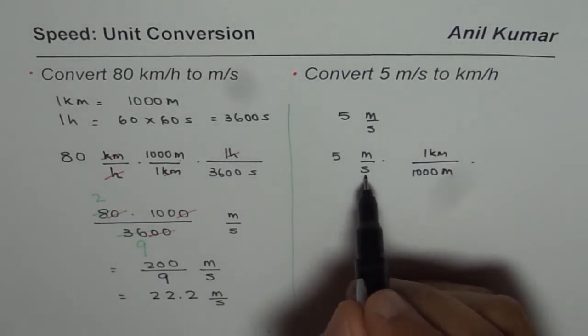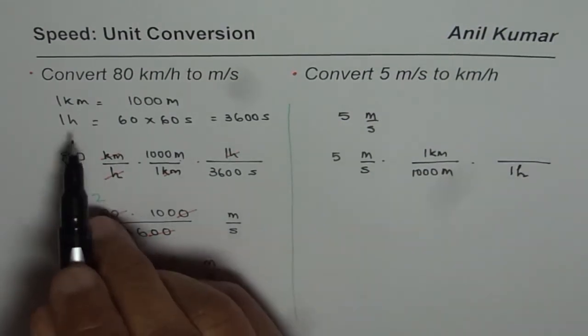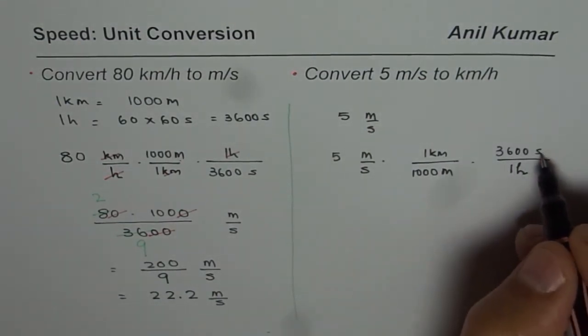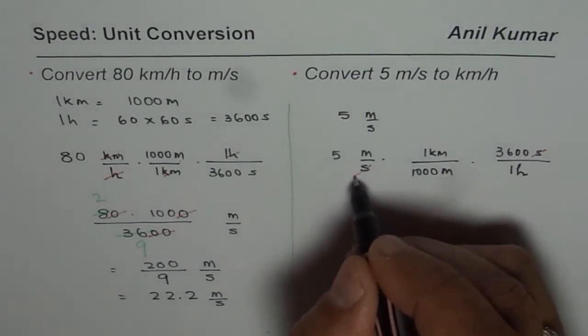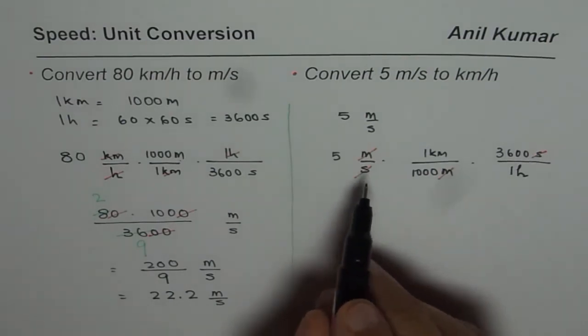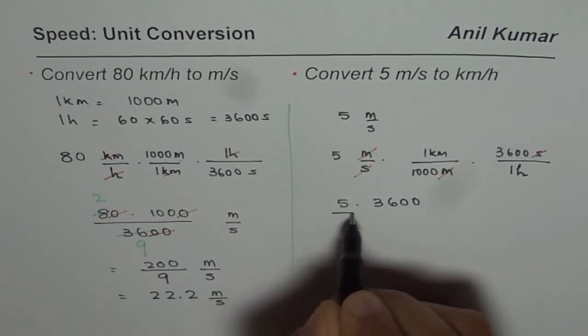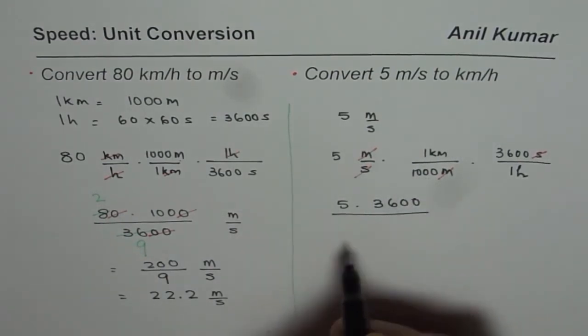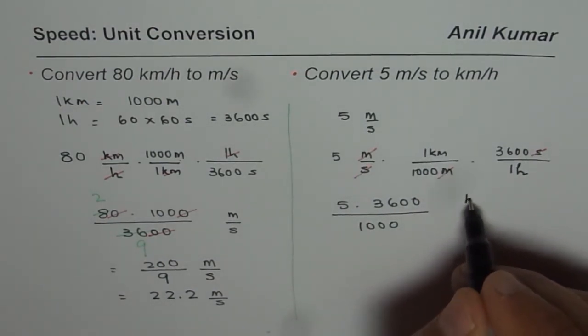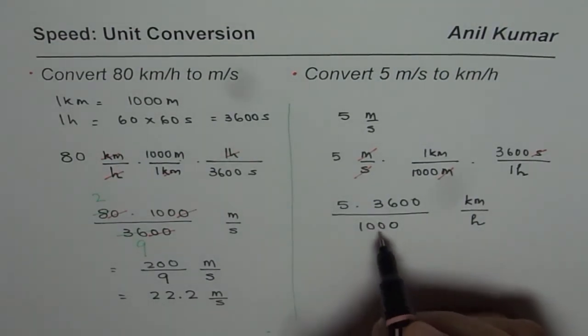Now instead of seconds we need hours, we need hours in the denominator here. So 1 hour is 3600 seconds. So that is the multiplication factor for this particular question. Do you see that? Now you get just the right units. So what you have here is 5 times 3600 divided by 1000, and the units are kilometers per hour.